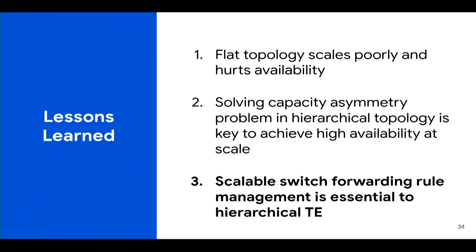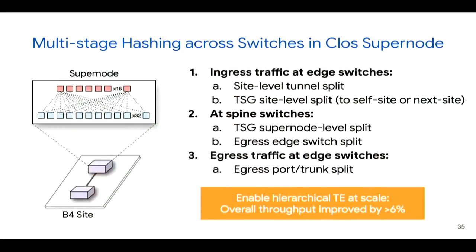Hierarchical TE is great, but it also requires multi-layer traffic splits that can easily exceed our switch table limits. Our solution implements hierarchical traffic engineering splits across different switches by leveraging the fact that our super node fabric is a Clos topology where traffic will be bounced through the spine before leaving the fabric. This mechanism allows us to run hierarchical TE at our target scale with 6% more throughput, which is quite substantial in absolute terms at our scale.